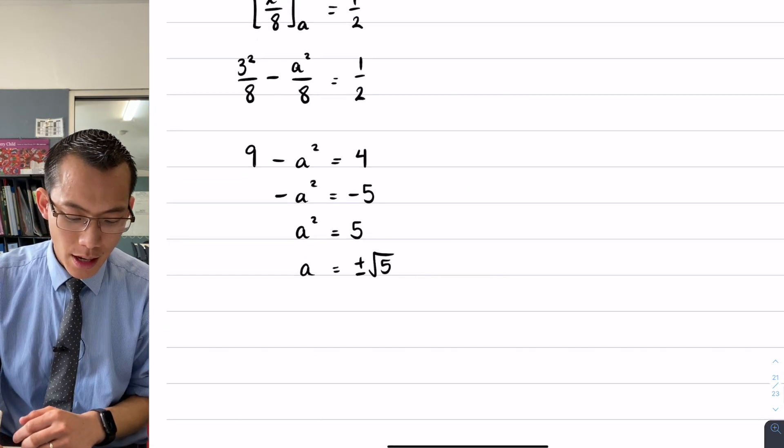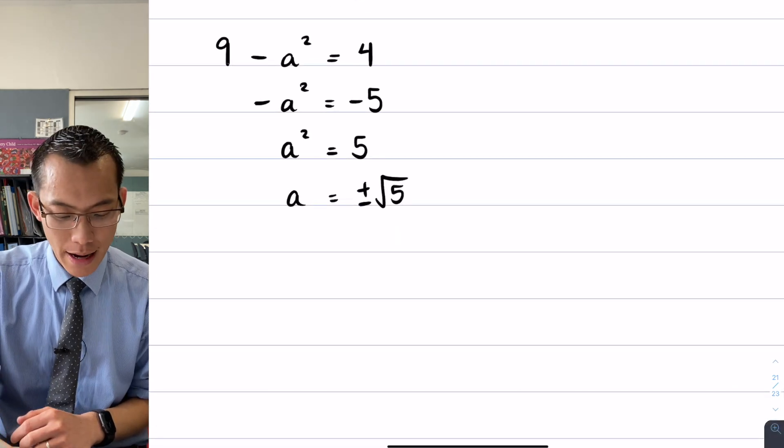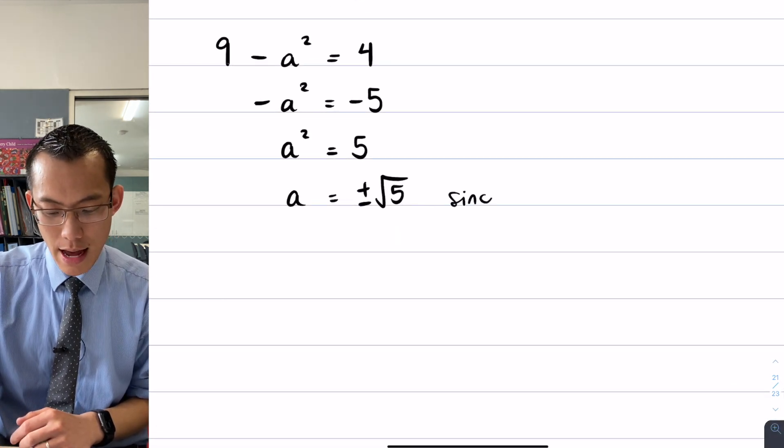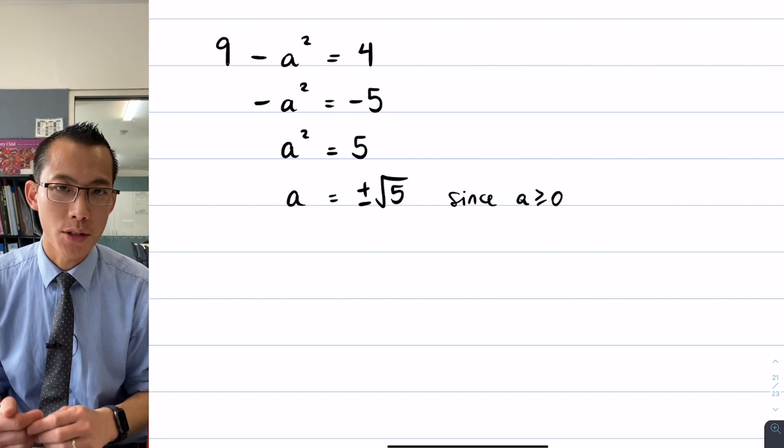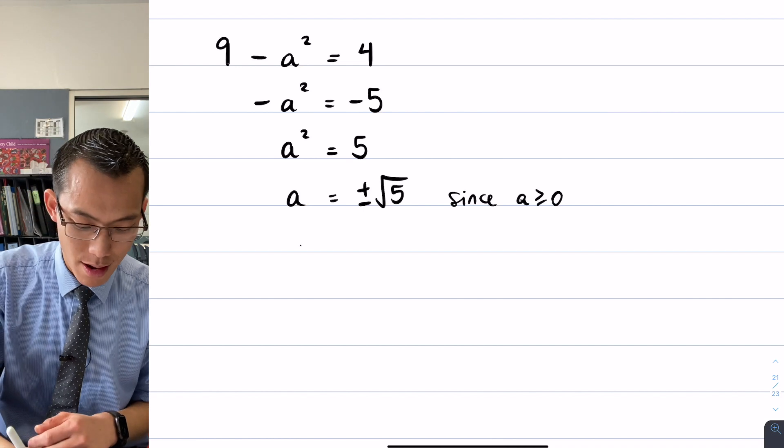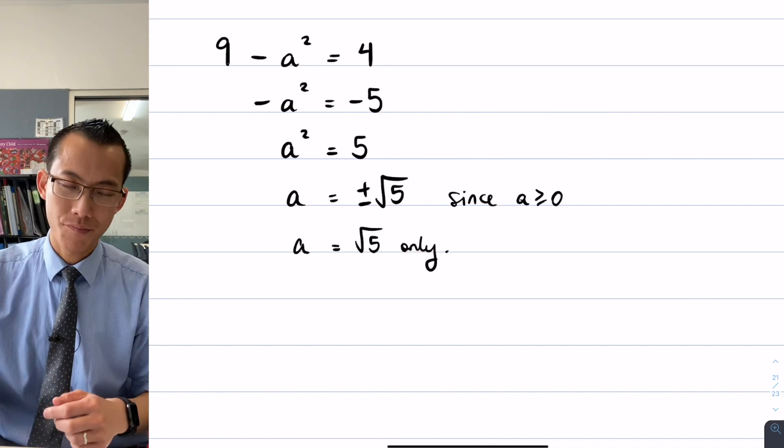So now when I come over to here, I've got this a equals plus or minus root five, but I can say since a has to be greater than or equal to zero, a can't possibly be the negative result. So a equals the square root of five only. Fantastic. So this is my lower boundary.